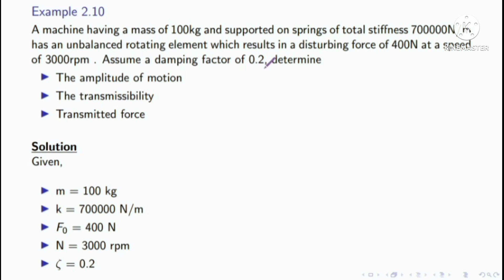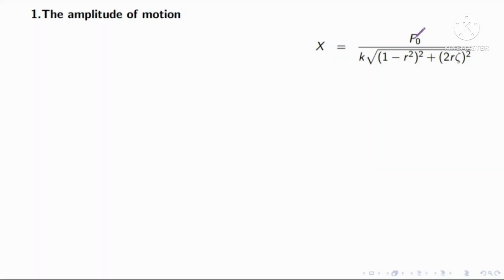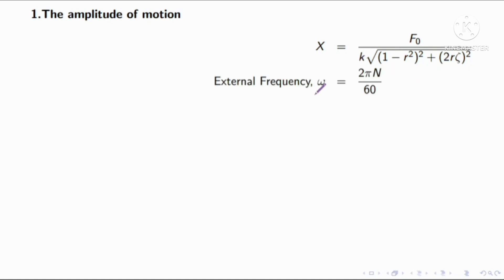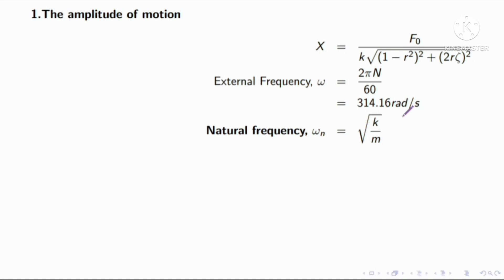To find the amplitude of motion: x is equal to f0 divided by k, into root of 1 minus r squared, all squared, plus 2r zeta squared. First find the external frequency omega equals 2 pi n by 60, substituting gives 314.16 radian per second. Natural frequency omega n equals root of k by m; substituting values gives 83.67 radian per second.